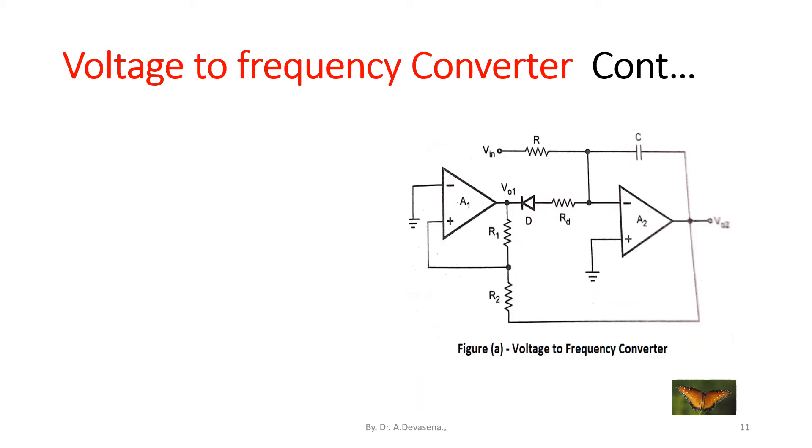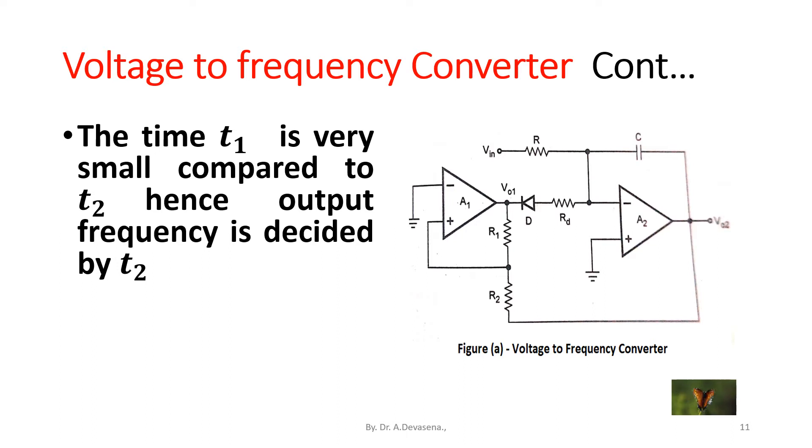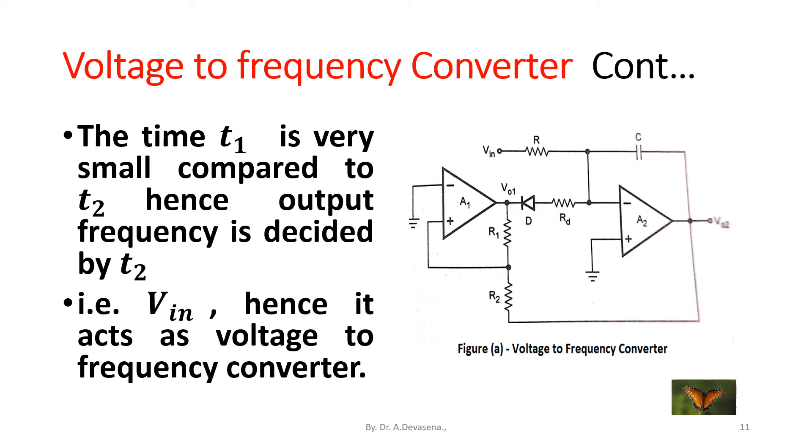The time T1 is very small compared to T2. Hence output frequency is decided by T2, that is V_IN. Hence it acts as voltage to frequency converter.